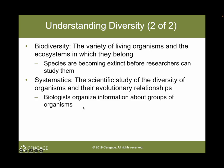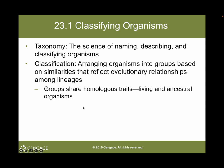Species are becoming extinct before researchers can even study them. Systematics is the scientific study of the diversity of organisms and their evolutionary relationships. Biologists organize information about groups of organisms. Taxonomy is a science of naming, describing, and classifying organisms, and it is an important aspect of Systematics.